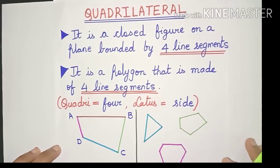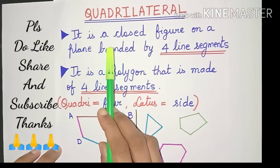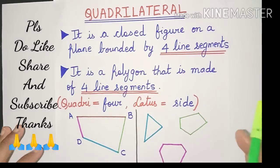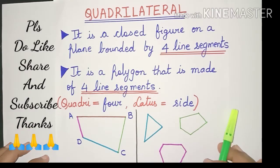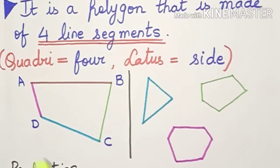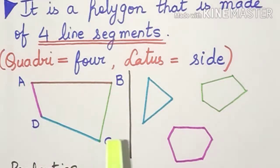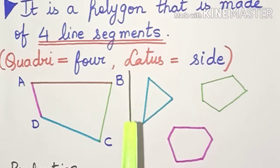Hello friends, today we are going to study about quadrilaterals and see their classifications. So let us start with the definition. A quadrilateral is a closed figure on a plane which is bounded by four line segments. If you see this figure over here, it has four line segments and it is a closed figure. Hence this becomes a quadrilateral.